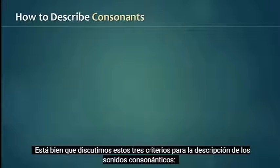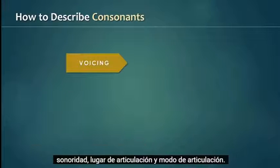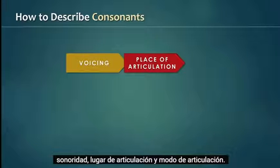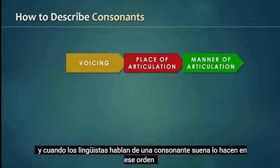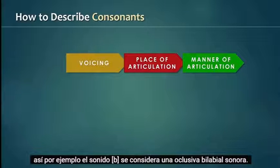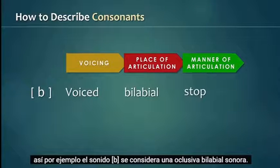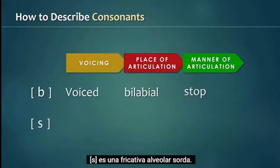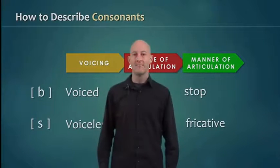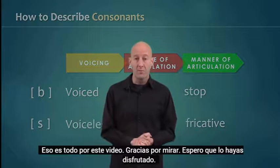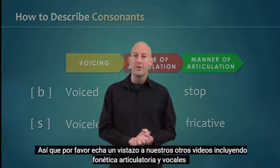Okay, we've discussed these three criteria for describing consonant sounds: voicing, place of articulation, and manner of articulation. When linguists talk about a consonant sound, they do so in that order. For example, the sound b is considered a voiced bilabial stop, and s is a voiceless alveolar fricative. That's it for this video — thanks so much for watching, I hope you enjoyed it!